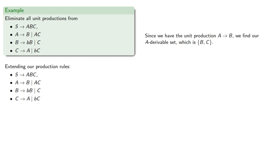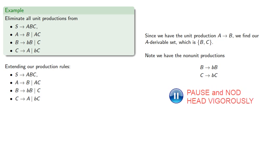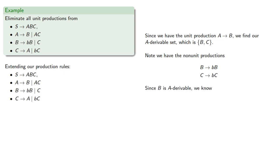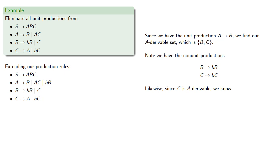Let's eliminate all unit productions from our grammar. Since we have the unit production A produces B, let's find our A derivable set, which we already found: B and C. Note that we have the non-unit productions B produces BB and C produces BC. Since B is A derivable, we can start at A, eventually produce B, and then apply the non-unit production to get BB, so we add the rule A produces BB. Likewise, since C is A derivable, A eventually gets to C and then produces BC, so we add A produces BC.